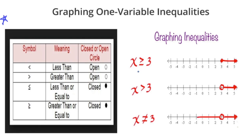Up here, this means x is greater than or equal to 3. Because it can be equal to 3, that's why the circle is closed. So when it's strictly greater than or less than, it has to be an open circle. And when it's greater than or equal to, or less than or equal to, it's going to be closed.